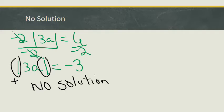The absolute value of 3a cannot equal minus 3. So I can simply say that this is no solution — no solution to this equation. No matter what number I plug in for a, it's not going to work. Because whatever's inside this absolute value symbol cannot come out of it and equal minus 3. So it's no solution — or I could represent this as a zero with a line through it, which means there is no set. There is no number that's going to satisfy the constraint of that equal sign.